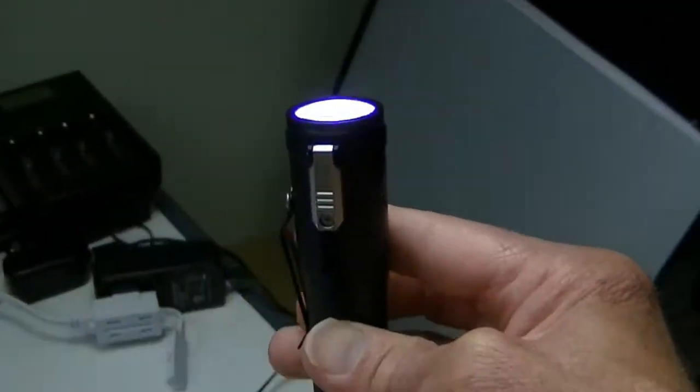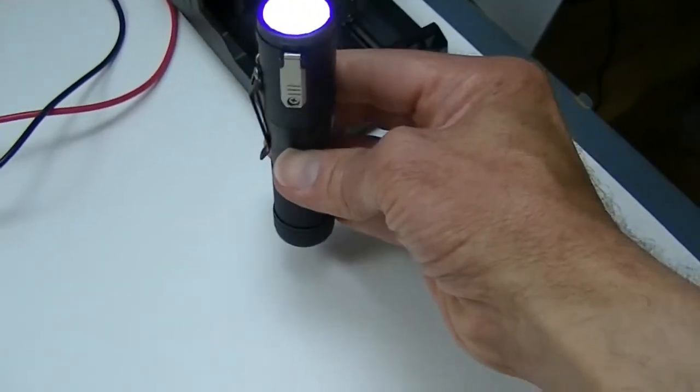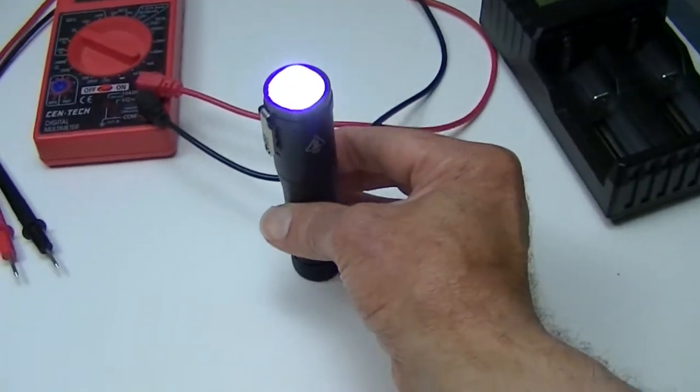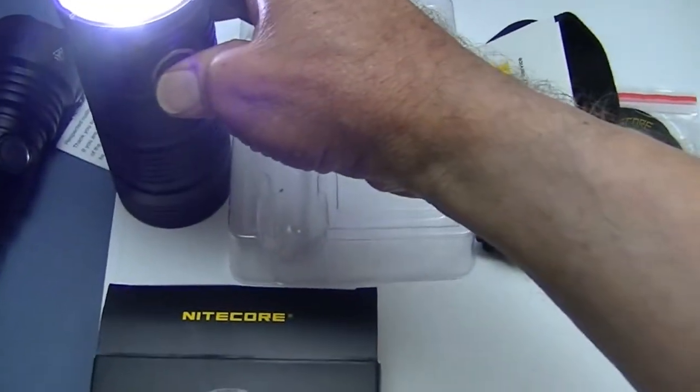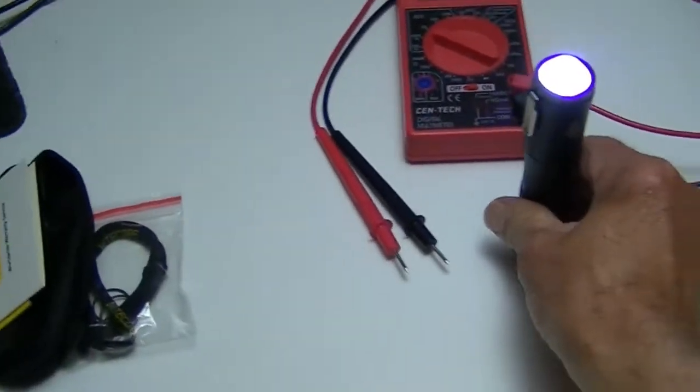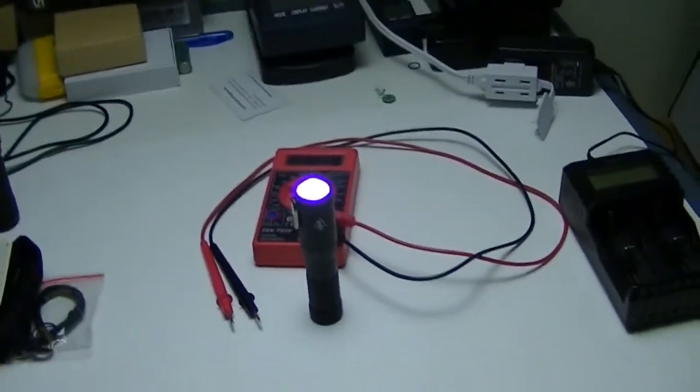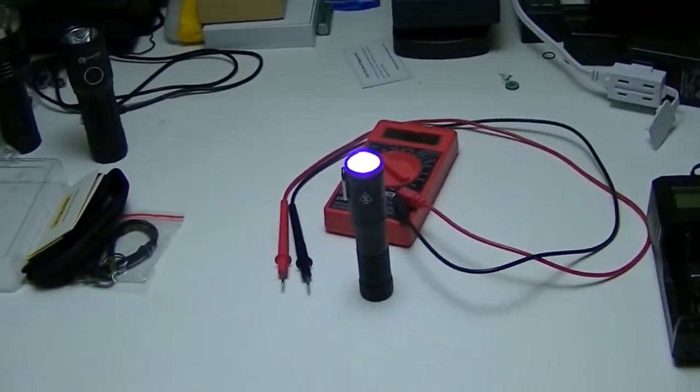Okay, so the light is on high mode and remember the battery is at 3.80. I'm going to turn off the light here and we're going to see approximately how long it takes for the battery to die, for the battery not to be able to power the flashlight any longer.